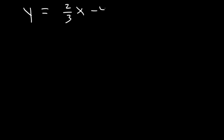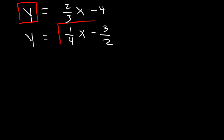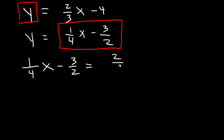Now let's work on another example. Let's say that y is equal to 2 over 3x minus 4, and also y is equal to 1 4th x minus 3 over 2. So it's very similar to the last problem, but this time we have fractions. Whenever you see two equations where y is equal to some function, you want to set these two equal to each other. It's basically the same as replacing this y with 1 4th x minus 3 over 2. So 1 4th x minus 3 over 2 is equal to 2 over 3x minus 4.